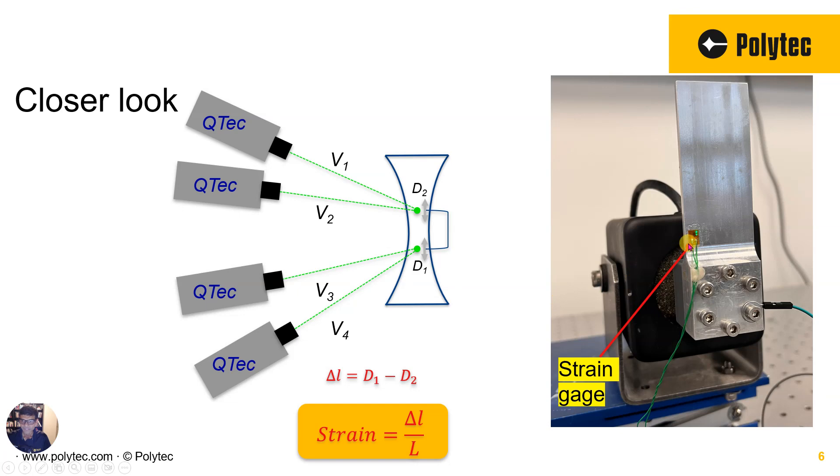So here you see the two dots. We also see the strain gauge. We are going to do a comparison between the strain gauge measurement and measurement done using four single-point vibrometers, which is the strain monitoring system. Now, the distance is like one millimeter between the two sets of beams. And remember, each green dot that you are seeing is actually superimposition, superposition of two single-point vibrometers.